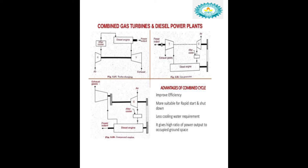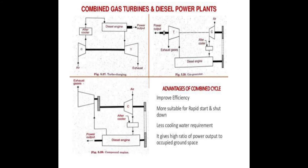Next, we will combine gas turbines and diesel power plants. In this combination, we combine the gas turbine with a diesel engine. See the diagram — there are three methods: turbo charging method, gas-based generator, and compound engine. Let us see the diagram of the gas generator method.